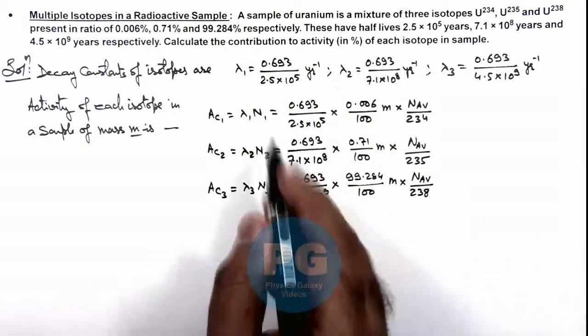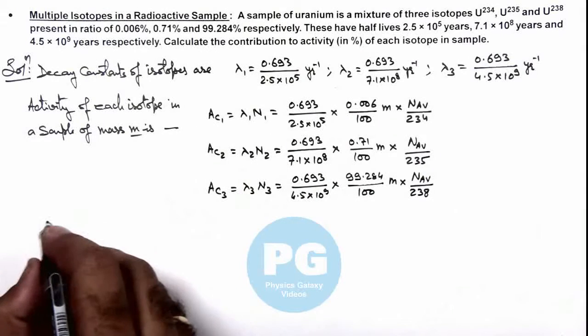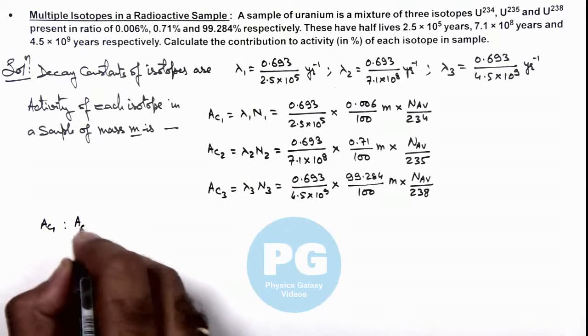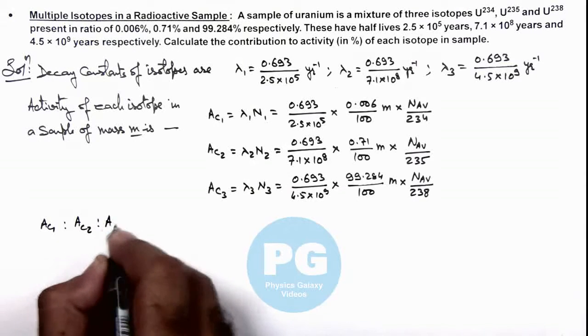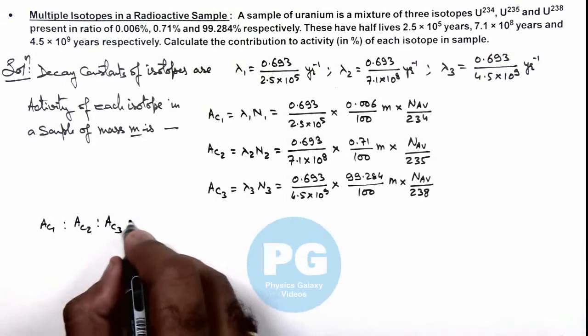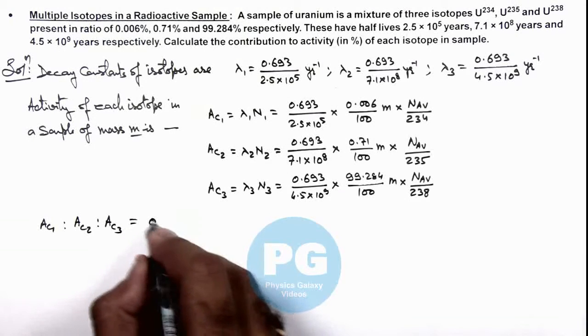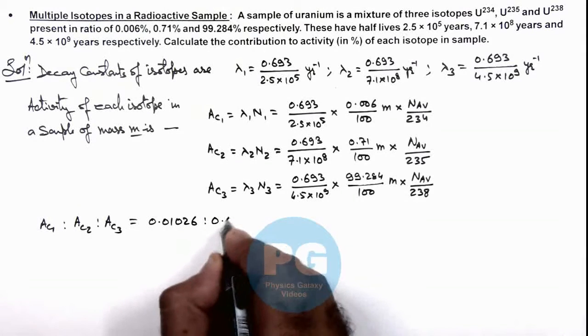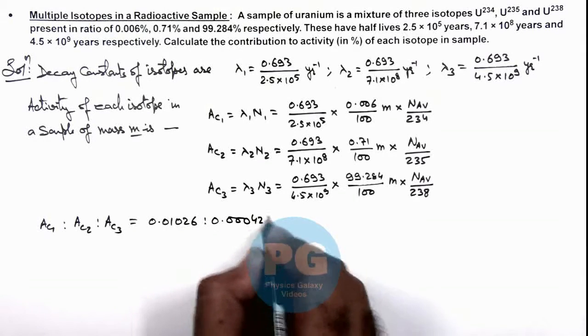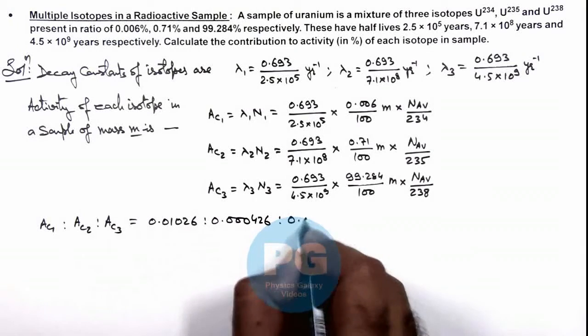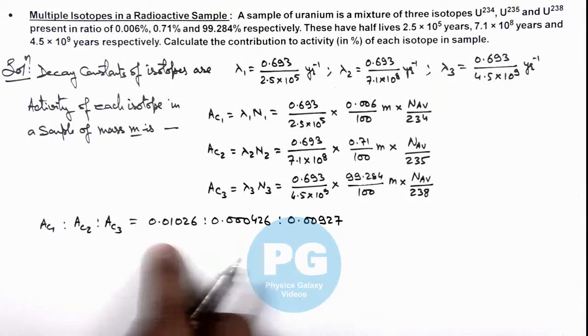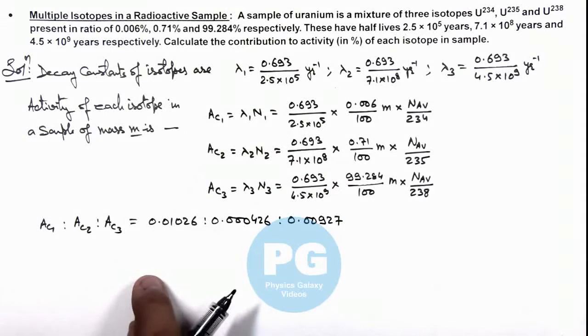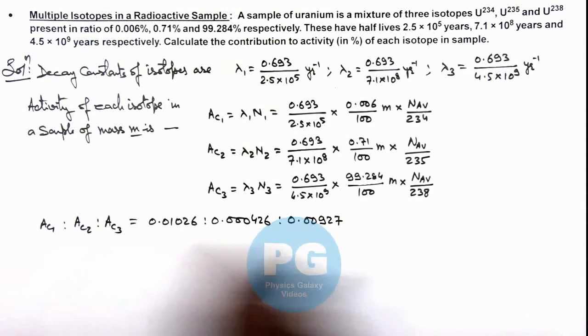From these numerical values if we take their ratios here we can see activity 1 is to activity 2 is to activity 3, their ratio is given by 0.01026 is to 0.000426 is to 0.00927. So these are the activity ratios for these three values. If we are having the activity ratios, we can directly calculate the percentage.